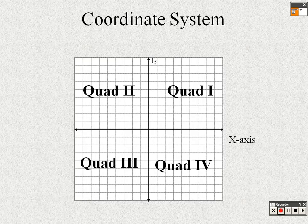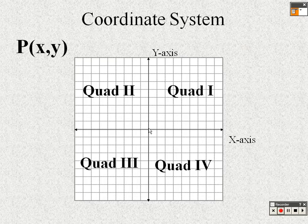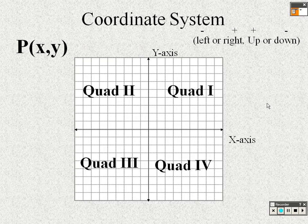You have the x-axis going left and right, and the y-axis going up and down. Every point is defined by an x and a y value. X means left or right, y means up or down. For example, the point (2, 3) means go right 2 and up 3. Moving left is negative, right is positive, up is positive, down is negative.